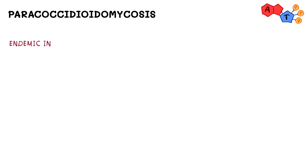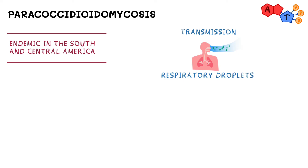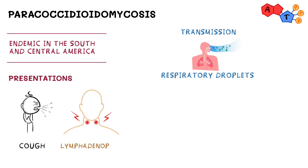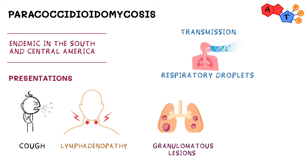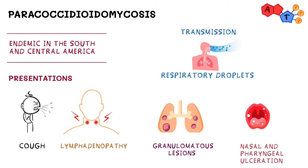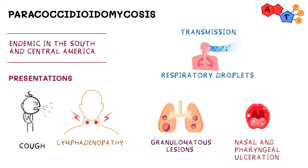The last systemic fungi are paracoccidioides, endemic to South and Central America. People get infected when exposed to respiratory droplets from another infected person. Patients initially present with cough, then the fungus disseminates causing lymphadenopathy — involving the cervical, axillary, and inguinal nodes. The fungus spreads to the upper respiratory system and lungs, causing granulomatous lesions. Paracoccidioides also causes painful nasal and pharyngeal ulceration. Key clinical features to remember: granulomatous lesions of the lung, lymphadenopathy, and oral ulcers.